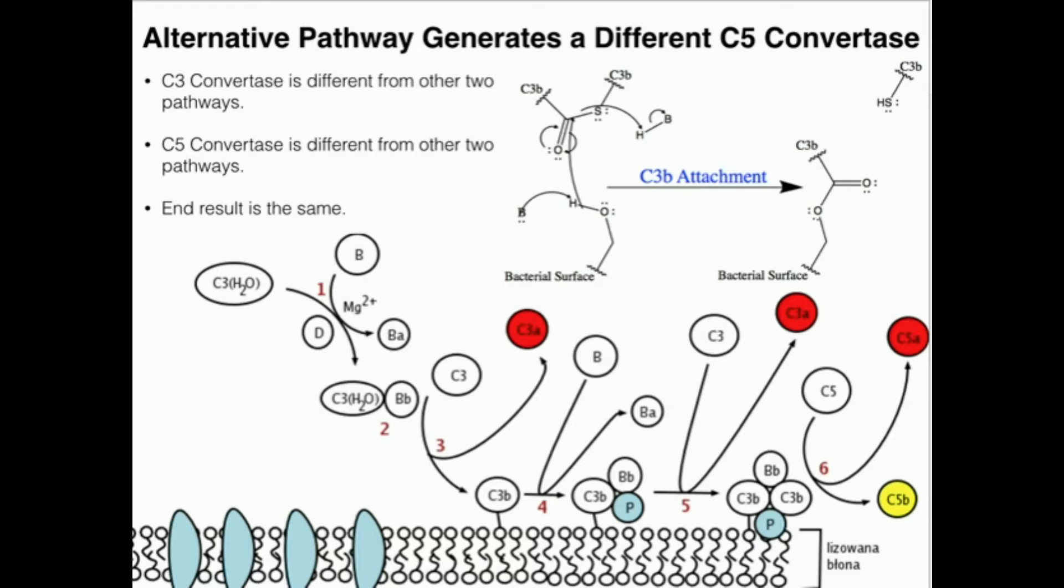These three proteins now are a C5 convertase. Again, the C5 convertase is different. In the other two pathways, C5 convertase was comprised of C4B, C2B and C3B. Here it's a little bit different, but it's still able to convert C5 to C5A, which floats away, and C5B.